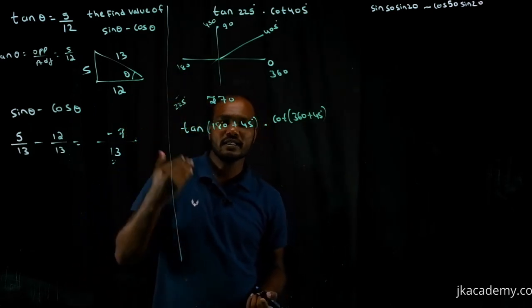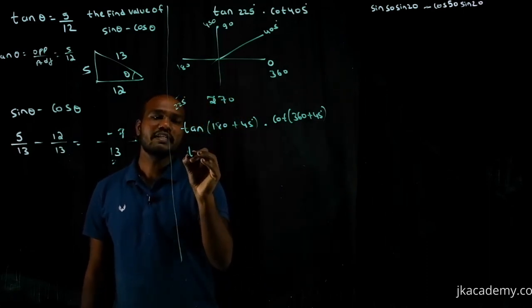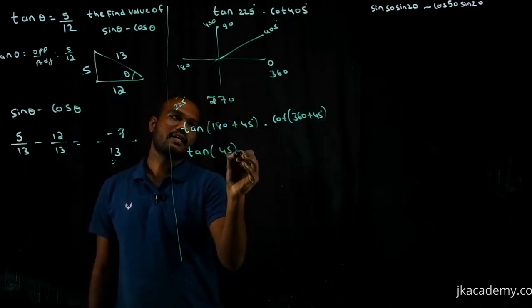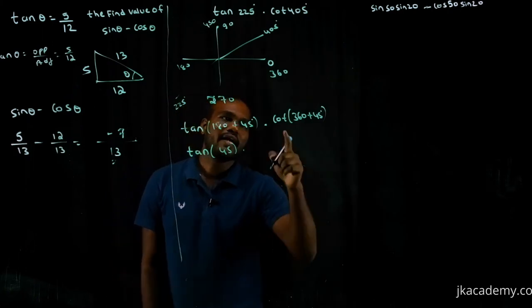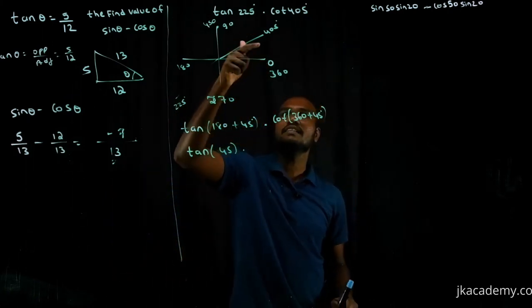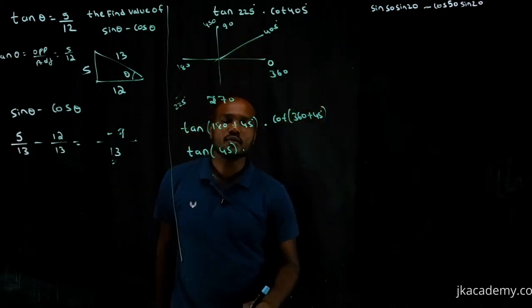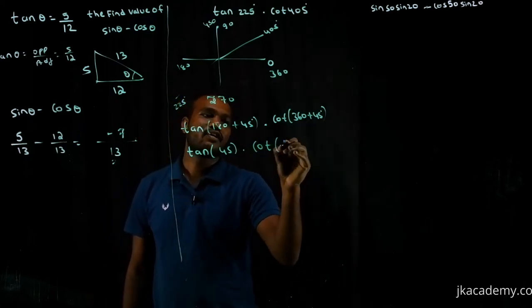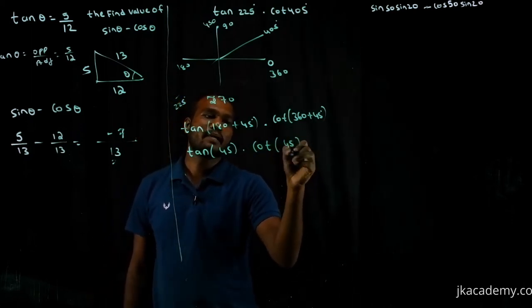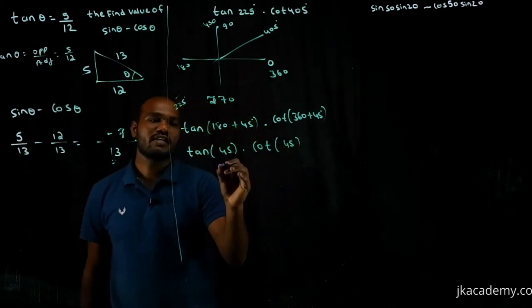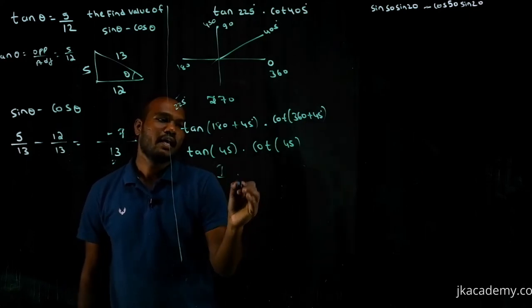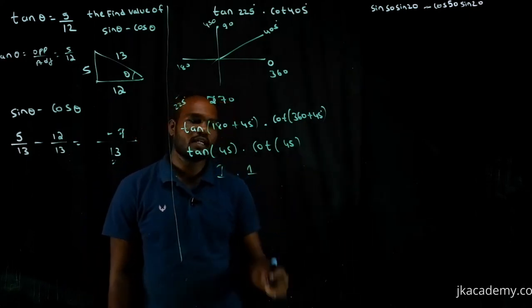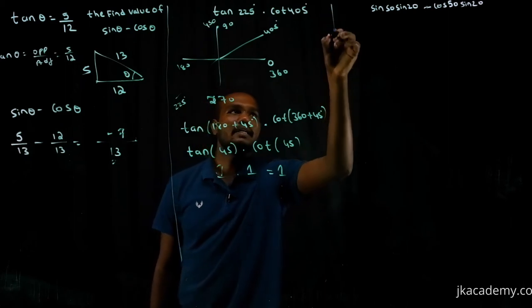Tan(180° + 45°) — this is in the third quadrant where tan is positive, so it equals tan 45°. Cot(360° + 45°) — this is in the first quadrant where cot is positive, so it equals cot 45°. Tan 45° = 1 and cot 45° = 1, so 1 × 1 = 1. The answer is 1.